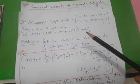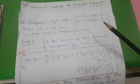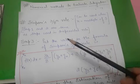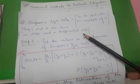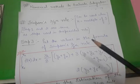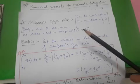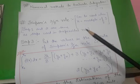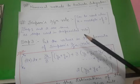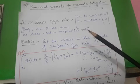Steps one and two are again the same as used in the trapezoidal rule and Simpson's 1/3 rule. You can go through those in my previous videos.